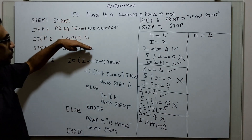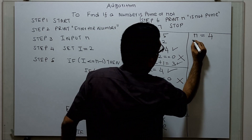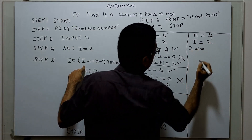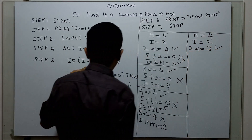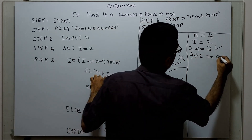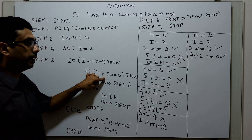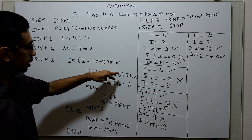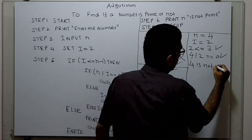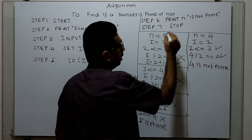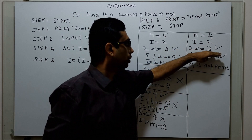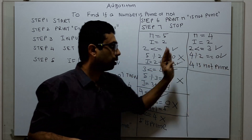Input n = 4, i = 2. Check: 2 less than or equal to n minus 1 — that is, 4 minus 1 equals 3 — condition is true. Check n modulo i: 4 modulo 2 equals 0? Yes, that is correct — 4 divided by 2 has remainder 0, so the condition is true. Go to step 6 and print n is not prime. So I am printing: 4 is not prime, and the algorithm stops. 4 is not a prime number because for i=2, 4 is completely divisible by 2. The algorithm works for both prime and non-prime inputs.